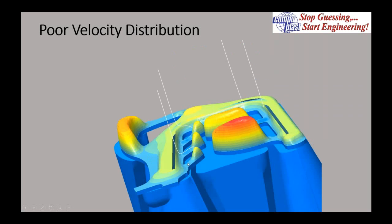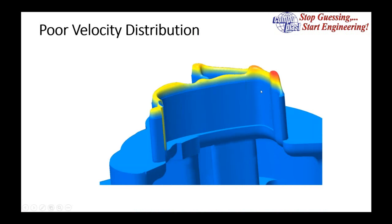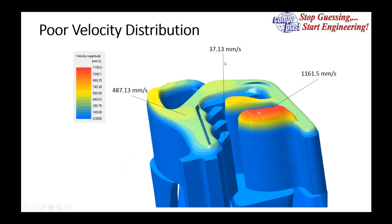Getting to the die exit, you can see the variation in velocity — ranging from 37 millimeters per second in some regions to 487 mm/s in another, and over 1,000 mm/s in another area. All this material, when it comes out of the die, can only go at one speed — the speed of the carrier that's pulling everything. So there's tremendous velocity rearrangement when the material exits the die, leading to thickness variation in the part and failure to achieve the desired thicknesses.